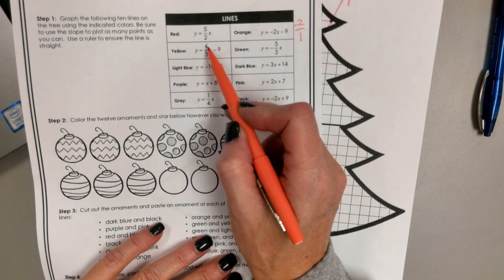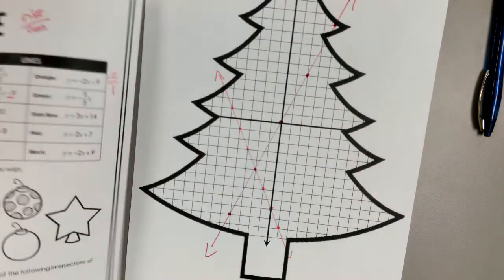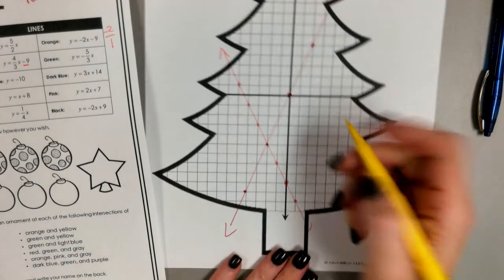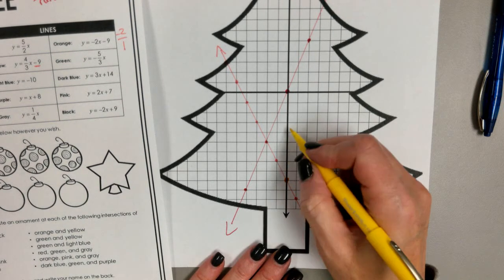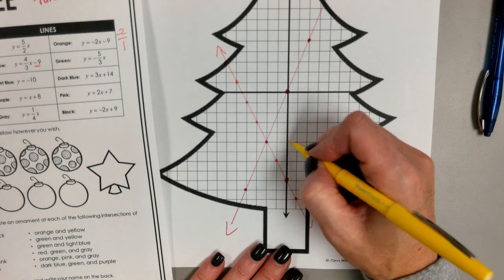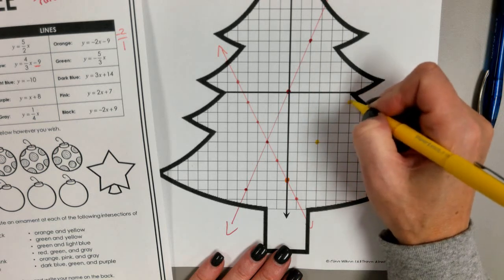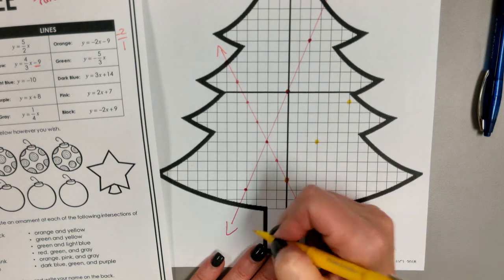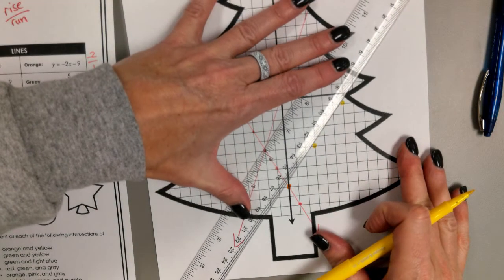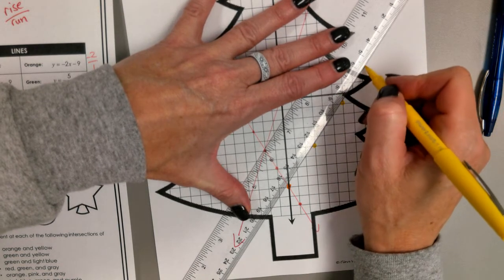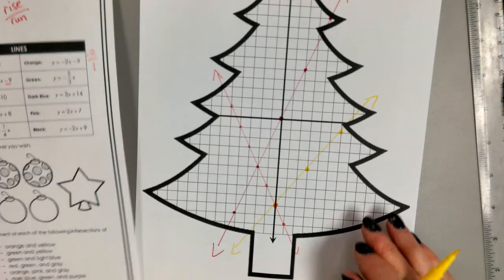And I'm going to do the yellow: y equals four thirds x minus nine. So again, there's my y-intercept starting at the negative nine, so I'll just put another dot right on top. And it said four thirds x, so I'm going up four and over three. And I'll even see, can't really back up, so that'll be all the line marks I do for this one.